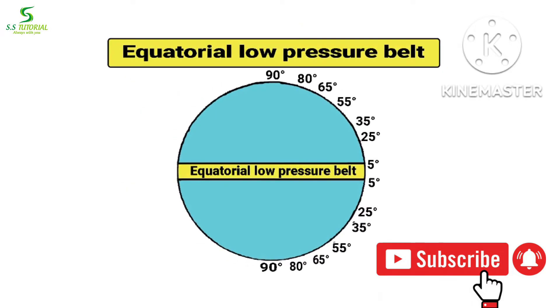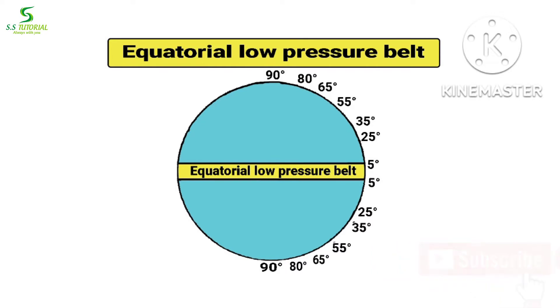At first we will know about the equatorial low pressure belt. The equatorial low pressure belt generally lies between 5 degrees north to 5 degrees south latitude, as you can see in the diagram.